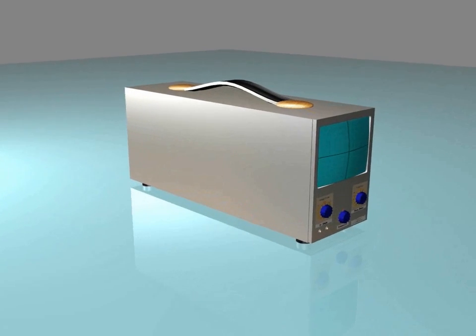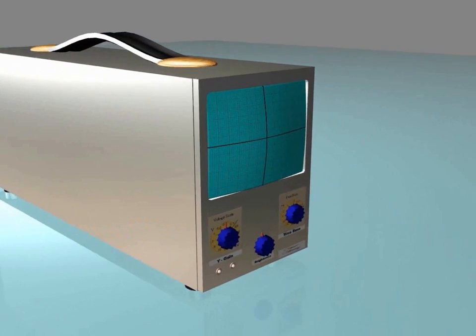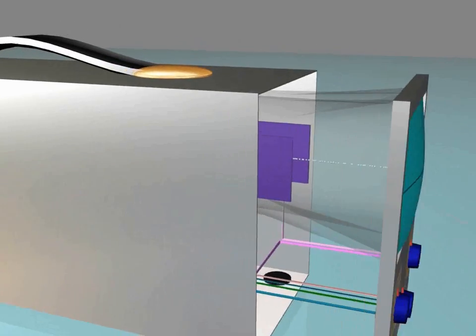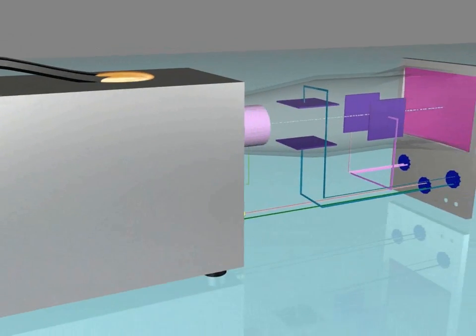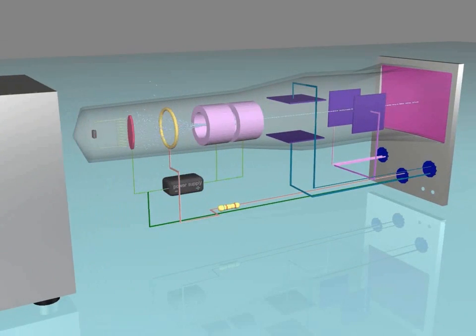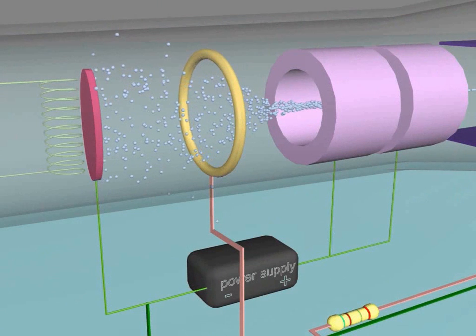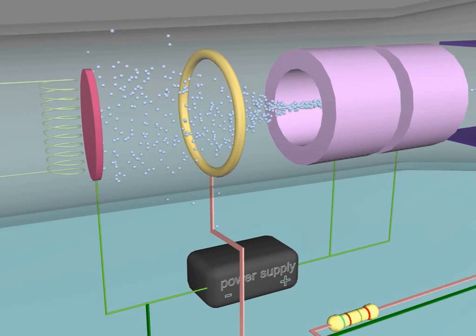Some modifications are made to the cathode ray tube to invent the cathode ray oscilloscope. The cathode ray oscilloscope is built up of three main parts. The first part, which looks like the cathode ray tube but with a few changes, is named the electron gun.